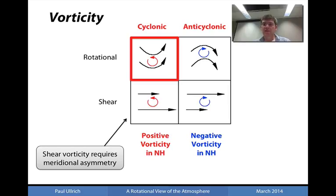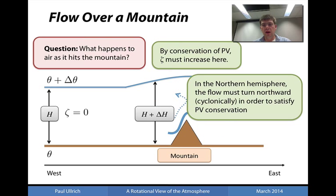And since we know that the flow must be meridionally symmetric — that is, there will be no change in the flow in the north-south direction — that eliminates the generation of shear vorticity from the possibilities that will occur when the height of the fluid column increases. Consequently we must conclude that the fluid column picks up a rotational component; that is, it begins spinning in response to the generation of positive vorticity. So in the northern hemisphere, the flow must turn northward — that is, it turns in a counterclockwise direction — in order to satisfy potential vorticity conservation.